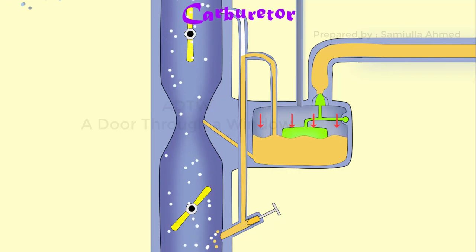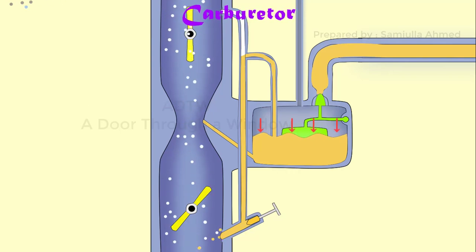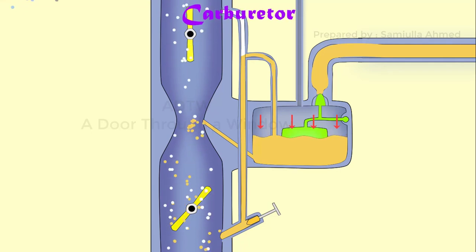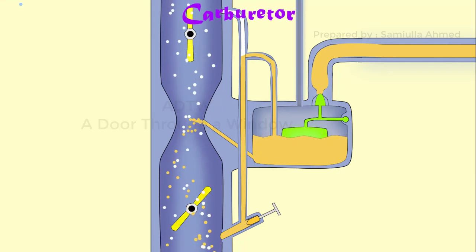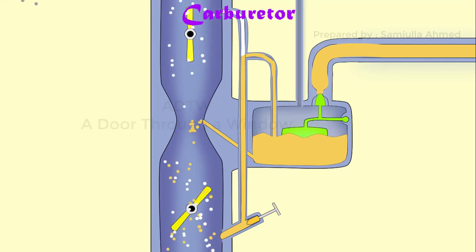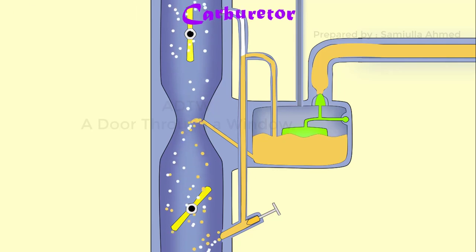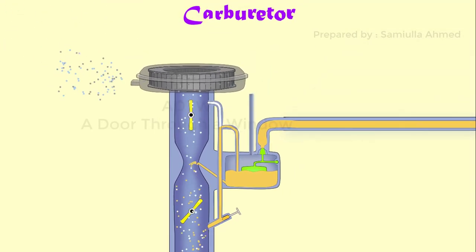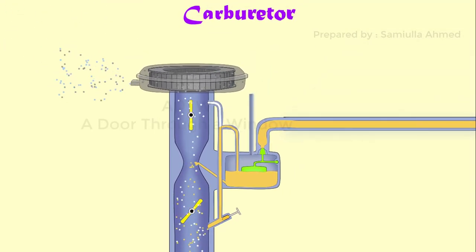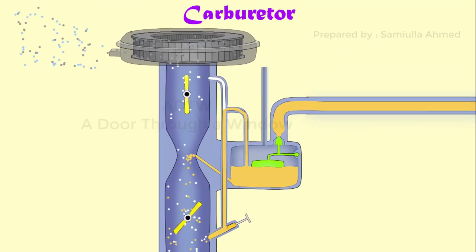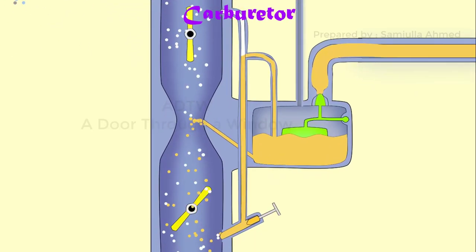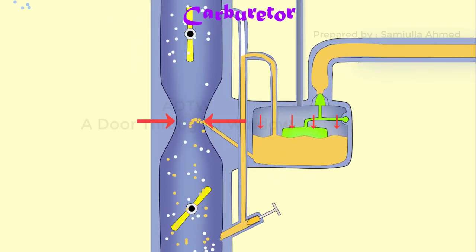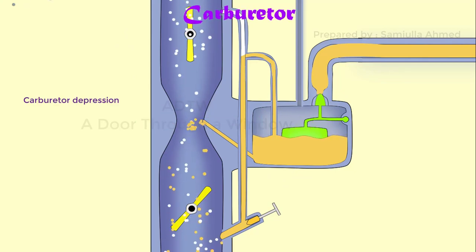Since the opening of the fuel discharge nozzle is small, as the fuel comes out of the discharge nozzle, it atomizes and mixes with the air making a uniformly mixed air-fuel mixture. This air-fuel mixture, which is also called charge, is fed into the engine cylinder. The pressure difference between the float chamber and the throat of venturi is known as carburetor depression.